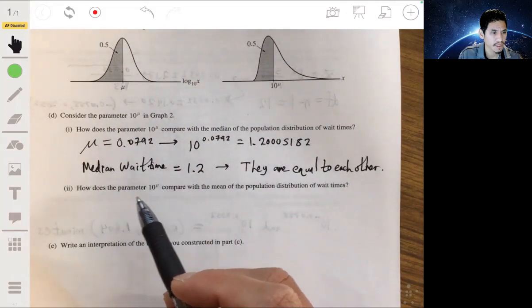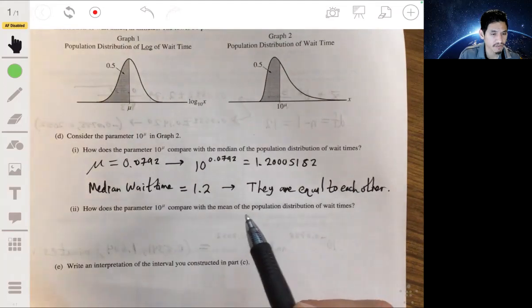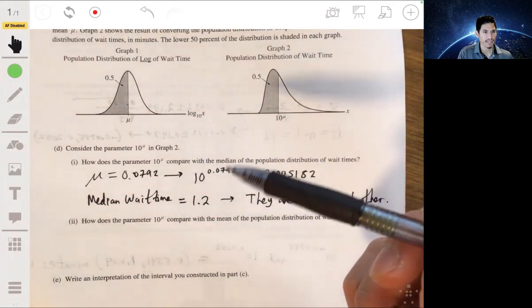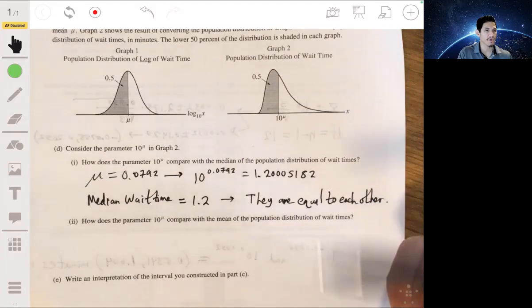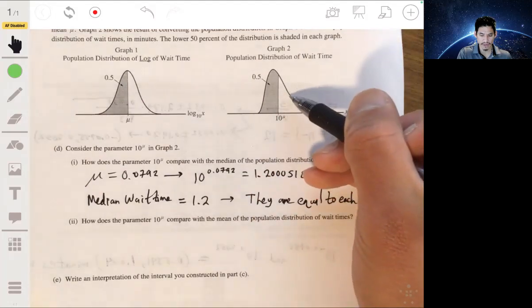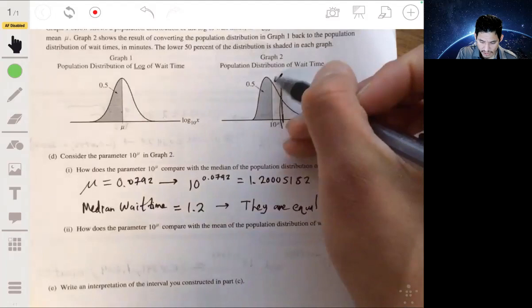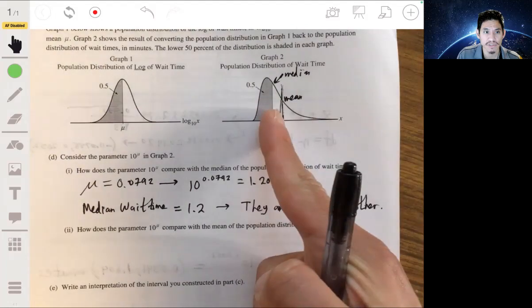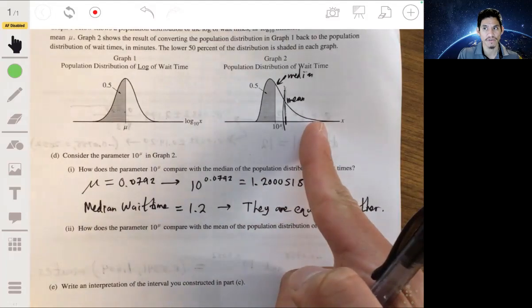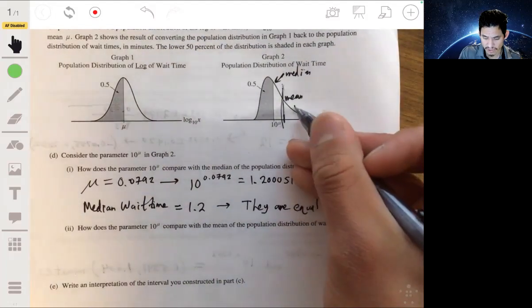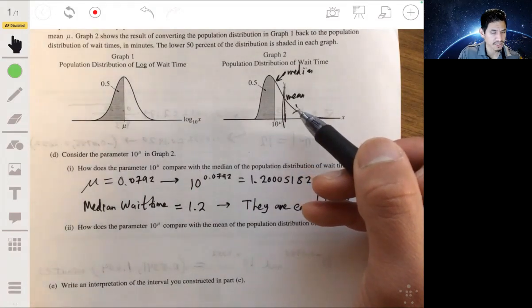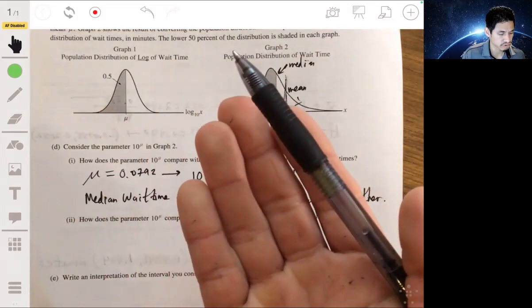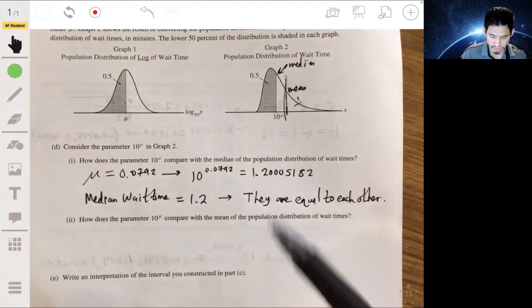Now in part two, how does the parameter 10 to the mu compare with the mean of the population distribution of wait times? You can look graphically that since this is skewed to the right, remember the mean gets pulled towards the tail. Even though this will be the median here, equal areas point, the mean has to be somewhere to the right of the median because it's being affected by the skewness. So it gets pulled towards the tail. So the mean here is greater.